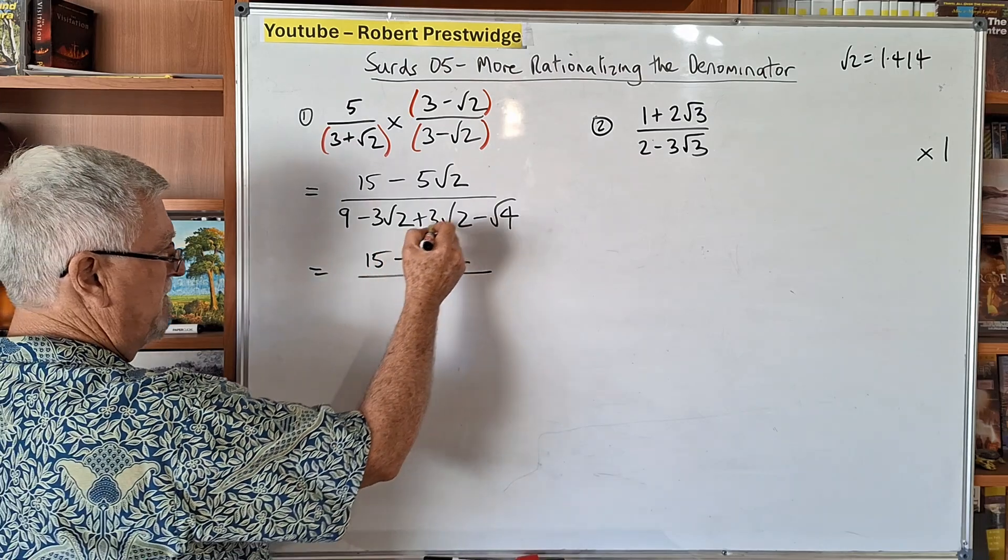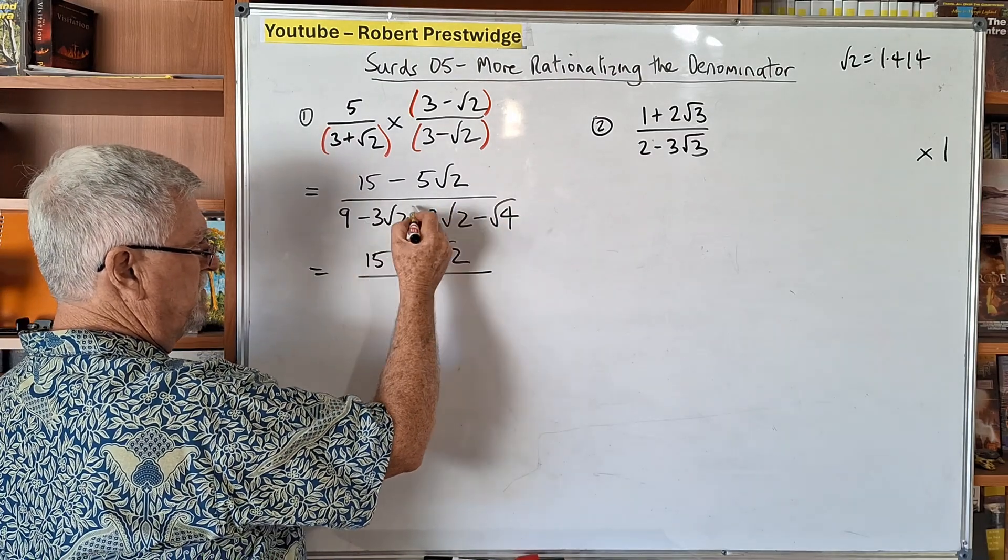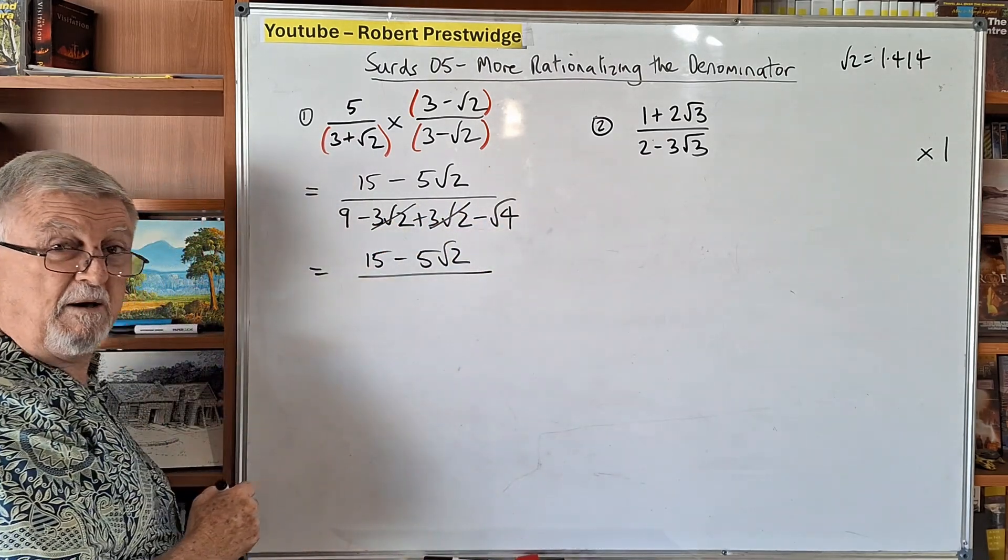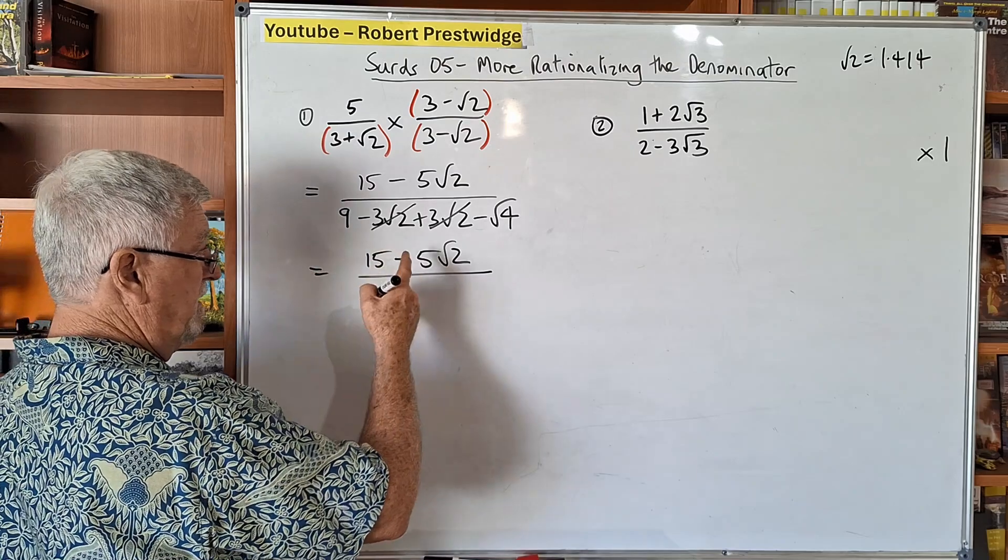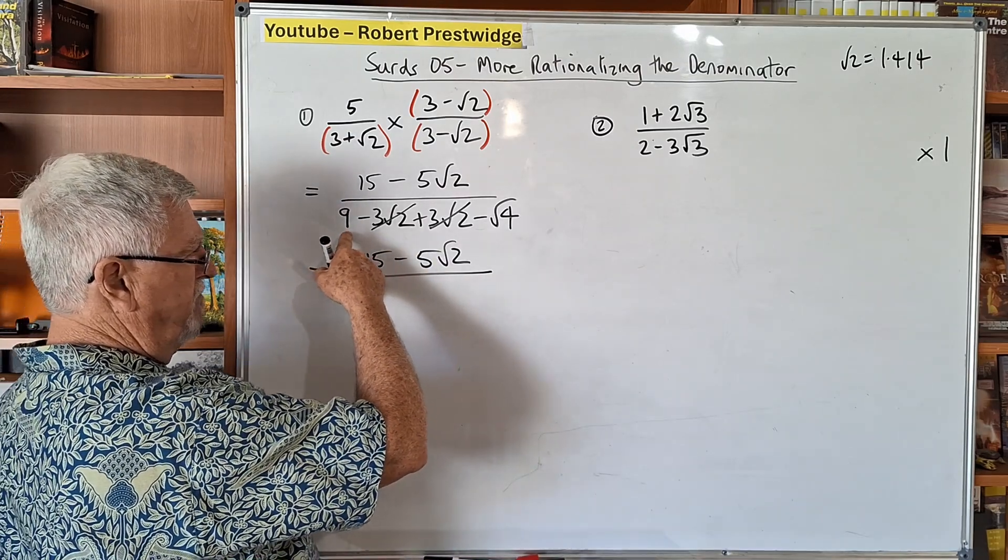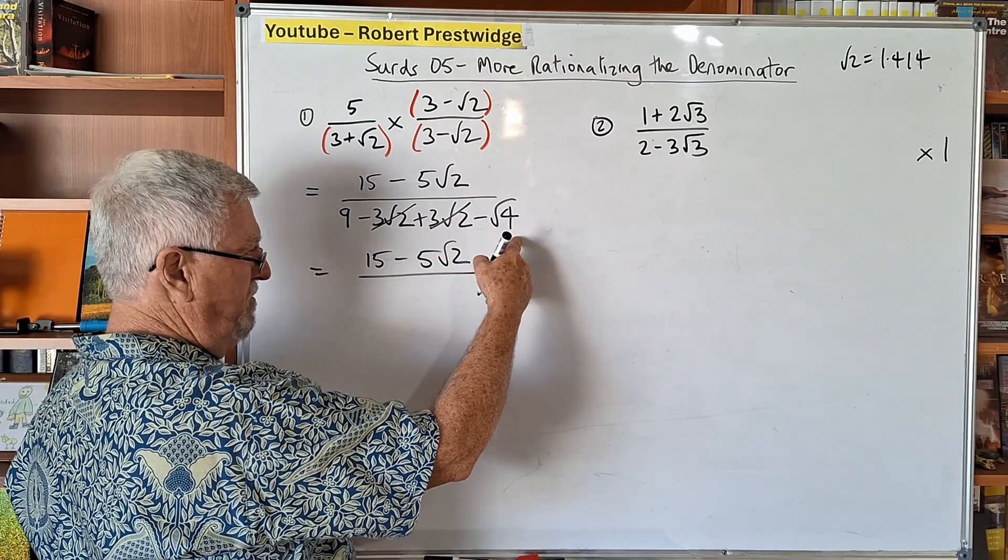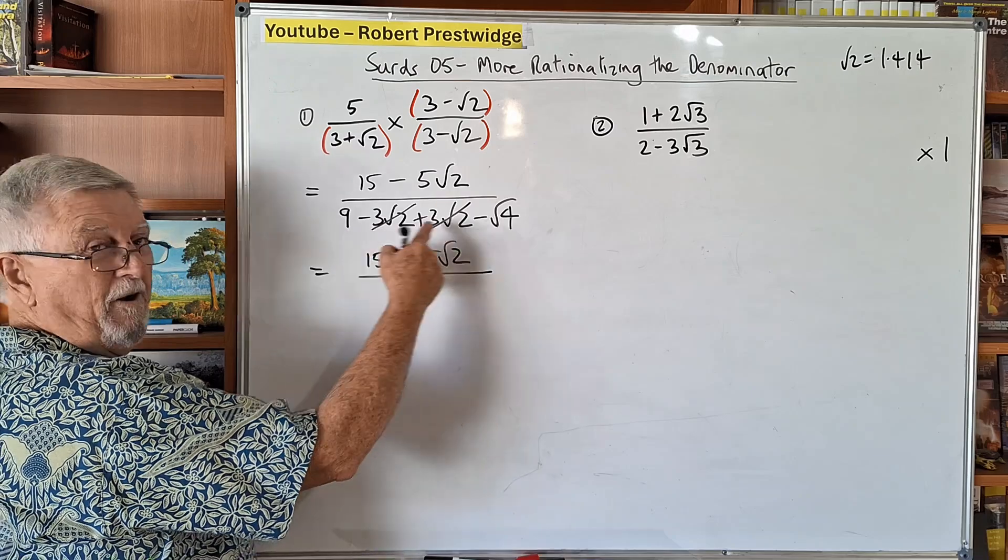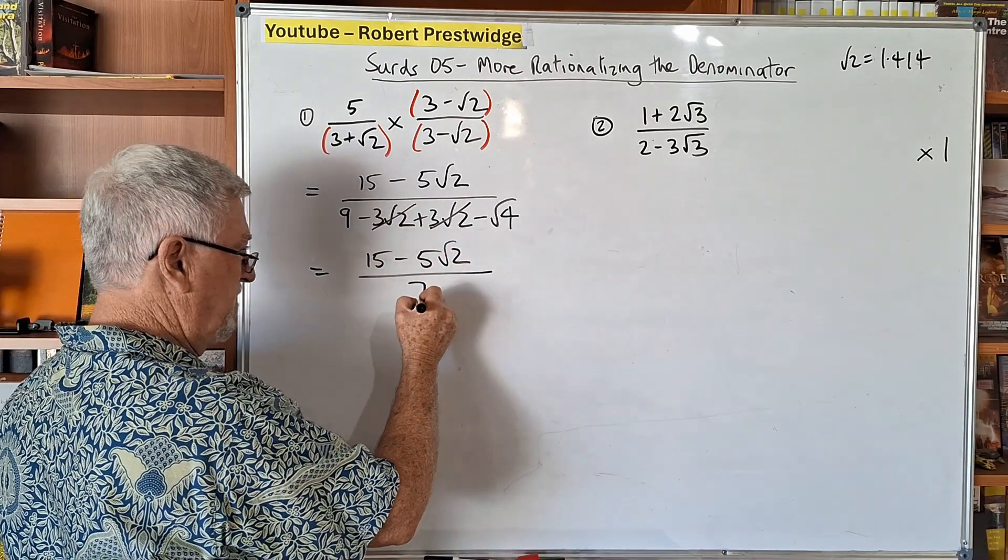Now the 3 root 2 and the minus 3 root 2, they eliminate each other, they become 0. Now I could write another step here, 9 subtract 2. But it's obvious enough to go, 9 take 2 is 7. And there's your answer.